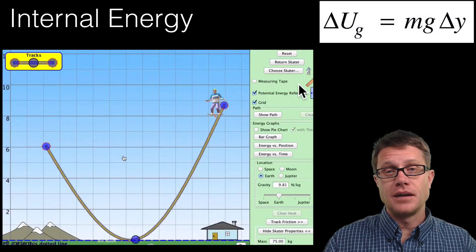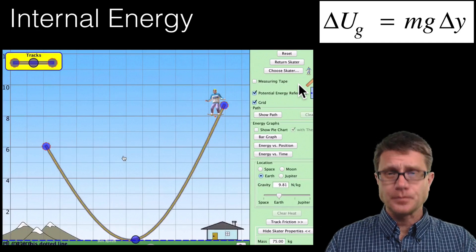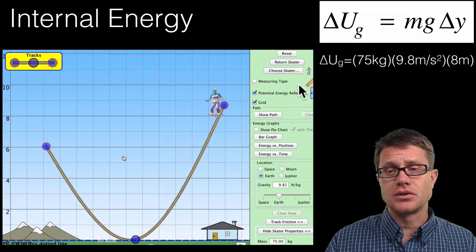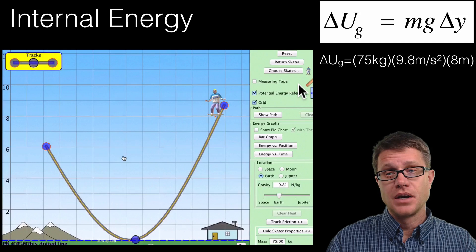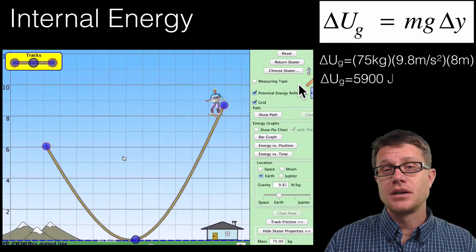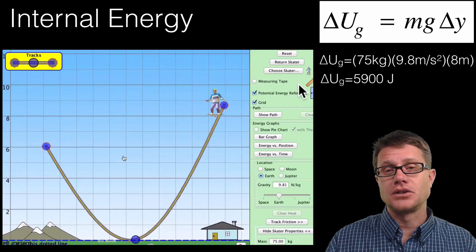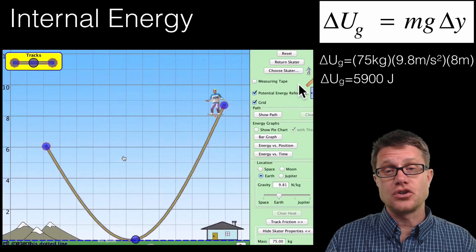Here is our equation. It is mg times the change in y, where y is how far we are in that gravitational field strength. We have got 75 kilograms, gravitational field strength at 9.8 and 8 meters. How many joules of energy does he have using significant digits? 5900 joules of potential energy stored there.